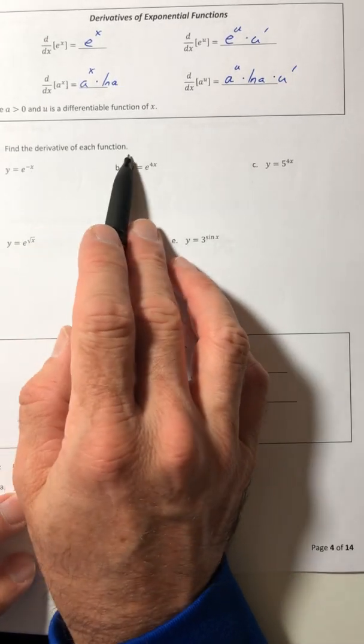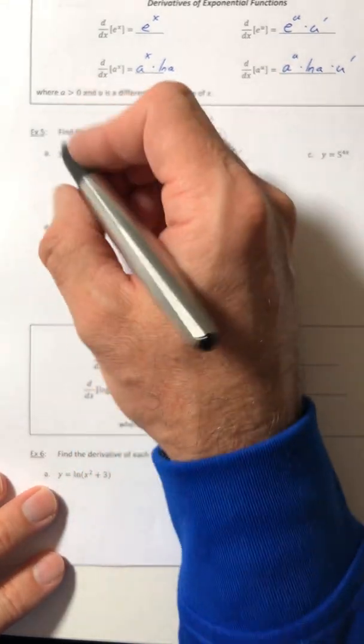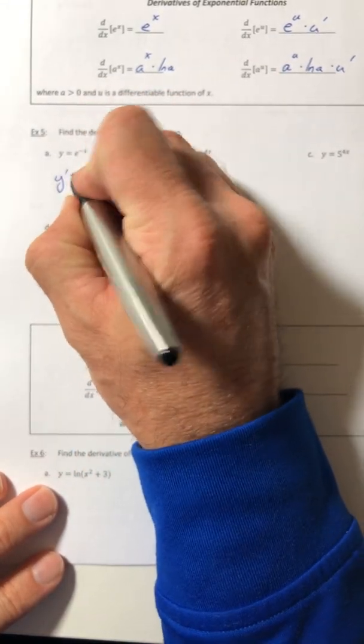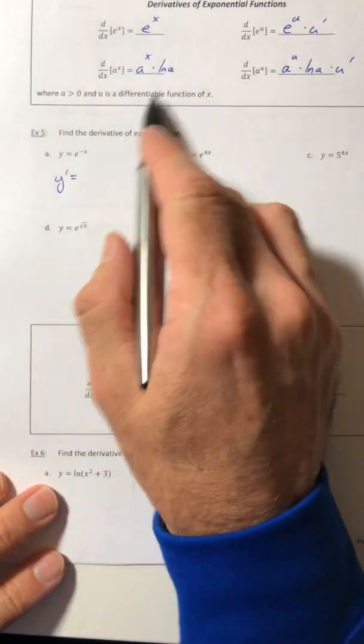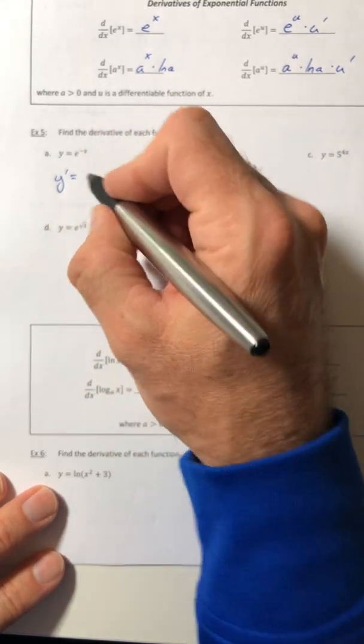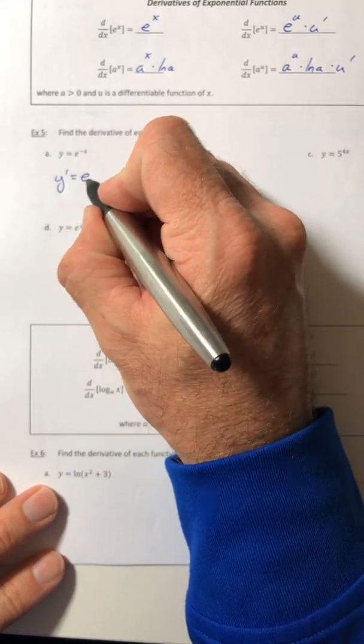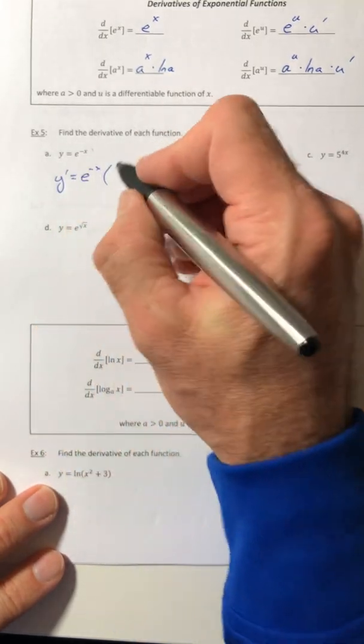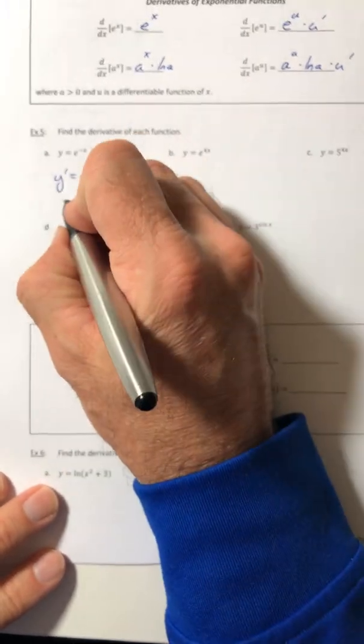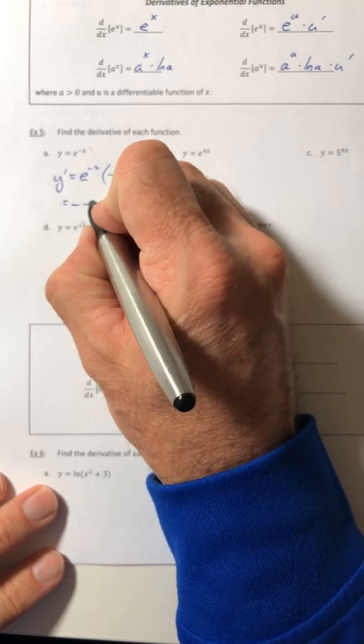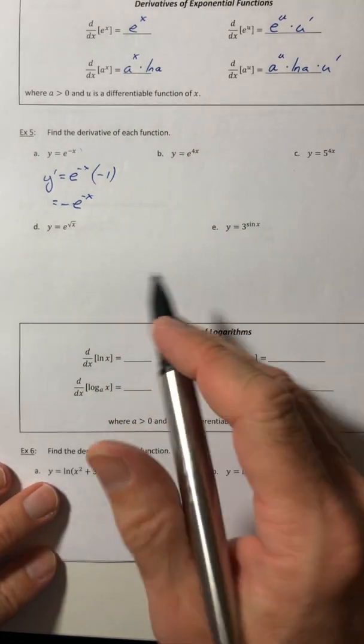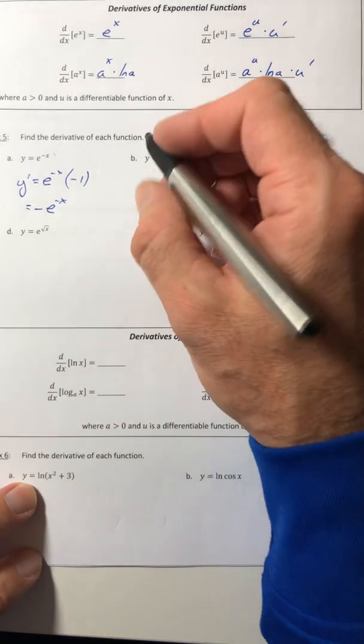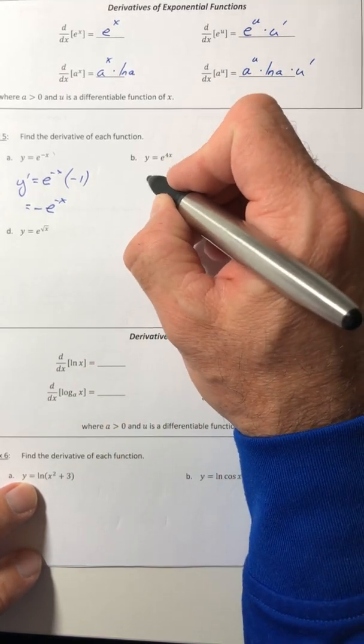Okay, find the derivative of each function. Okay, so it's exponential, so I'm going to rewrite it just as it is and then multiply by the derivative of the exponent, which is negative one. So it's really just negative e to the negative x. Alright, that's pretty easy. For part b.